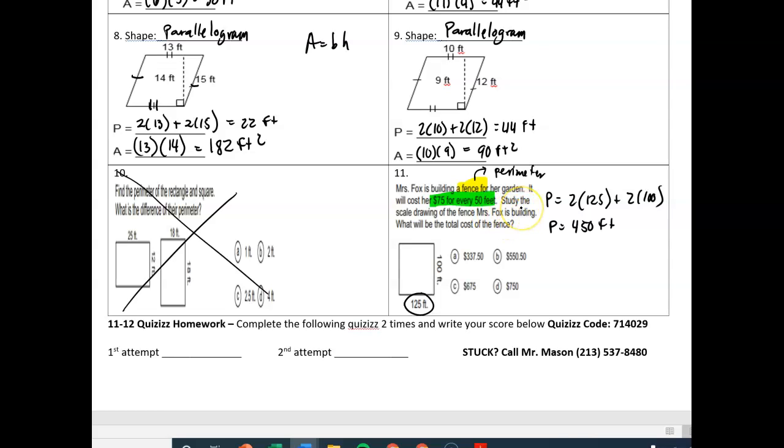Well, remember, the cost is going to be $75 for every 50 feet. So if the perimeter was just 50 feet, it costs $75. If it was 100 feet, it would cost $150, and I keep on going up. So to figure out how much it costs for 450, just take 450 and divide it by 50. We want to see how many 50 feet segments there are in 450. And when we do that, we figure out that there are nine total segments that we'll pay for. Remember, one is going to be $75. So to figure out how much nine is, we do nine times $75. And when you do that, you should come up with your answer of the cost of the fence being $675. So C.